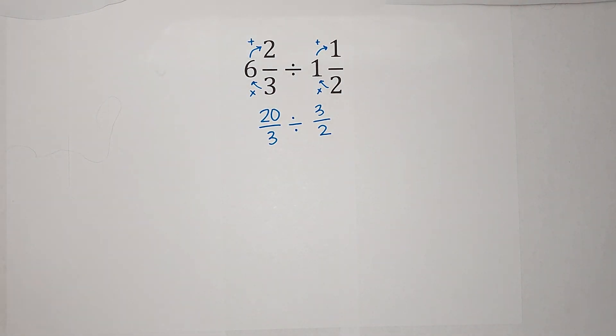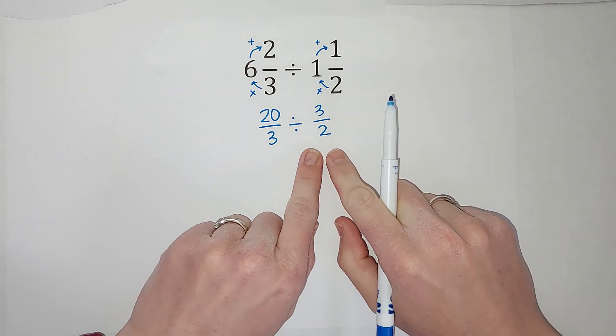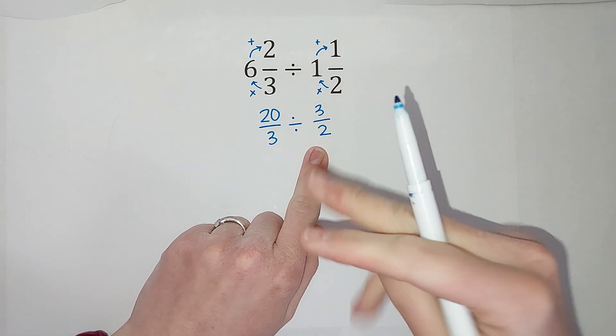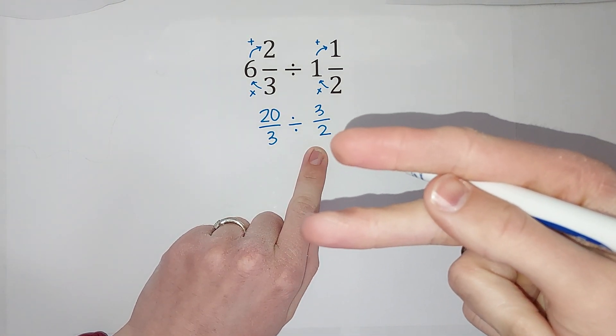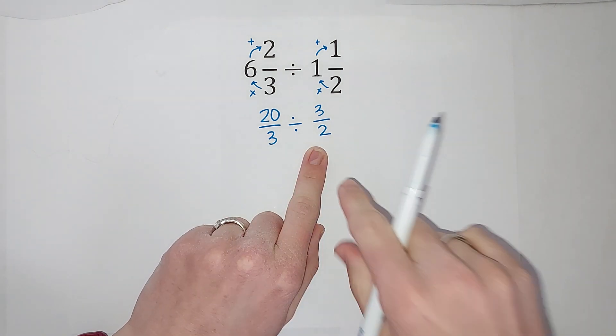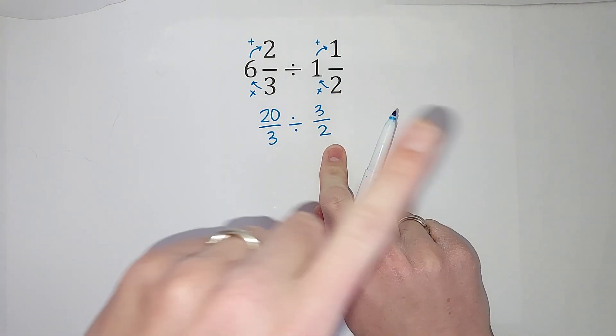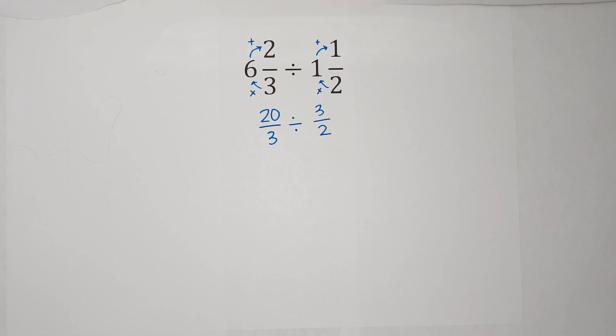All right, when I divide fractions, I take the second one, flip it, fancy word is reciprocal, and then I multiply. If you don't believe me, I'll link a video in the corner showing why this works.